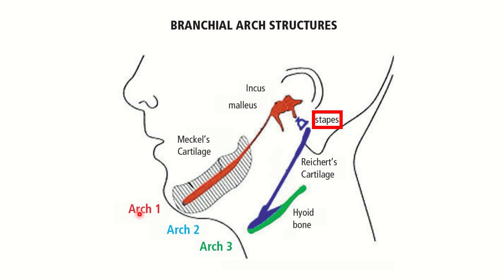From the first arch, Meckel's cartilage develops, followed by the mandible, and then the malleus and incus. But the stapes is developed from a different arch — arch number two. That means the stapes is derived embryologically from the second arch.